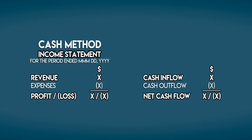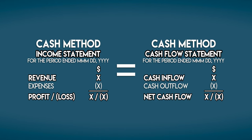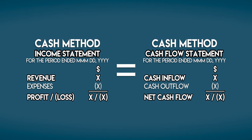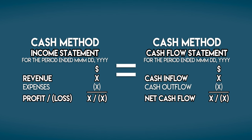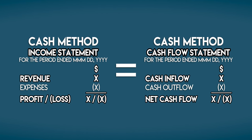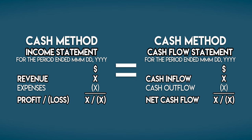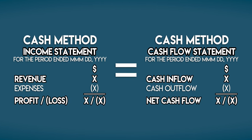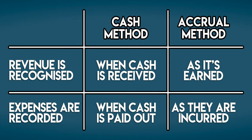So the income statement prepared under the cash method is equivalent to a cash flow statement — keep that in mind, we'll come back to it later. Plenty of small businesses do their books this way, which is fine, but the cash method isn't allowed under IFRS or GAAP. If you're following either of these, then you must use the accrual method.